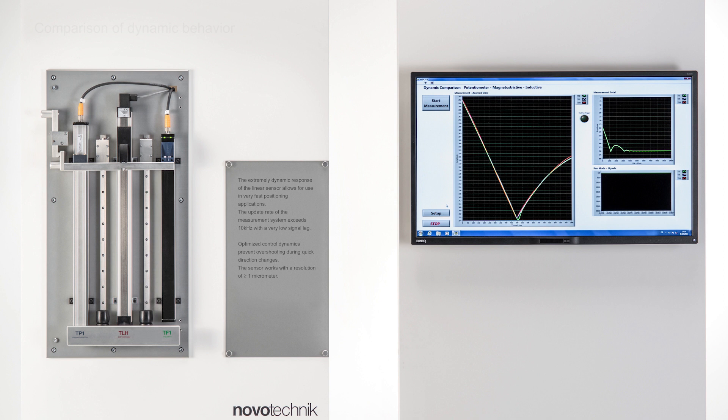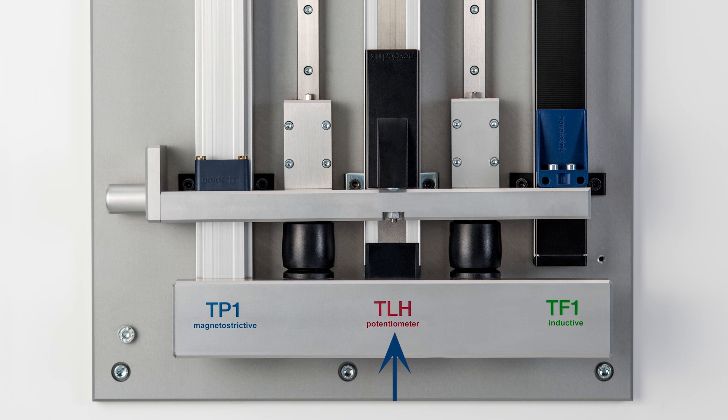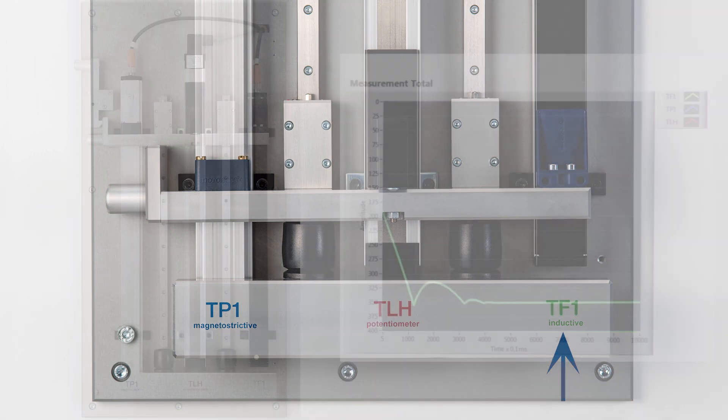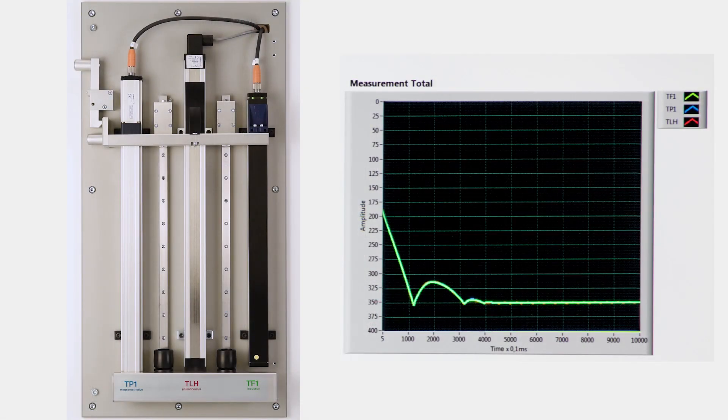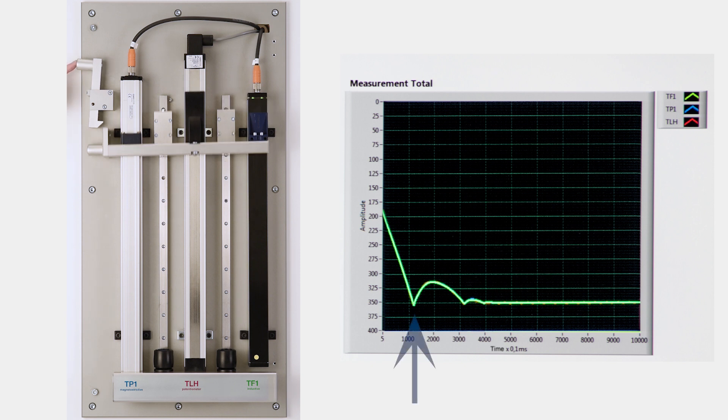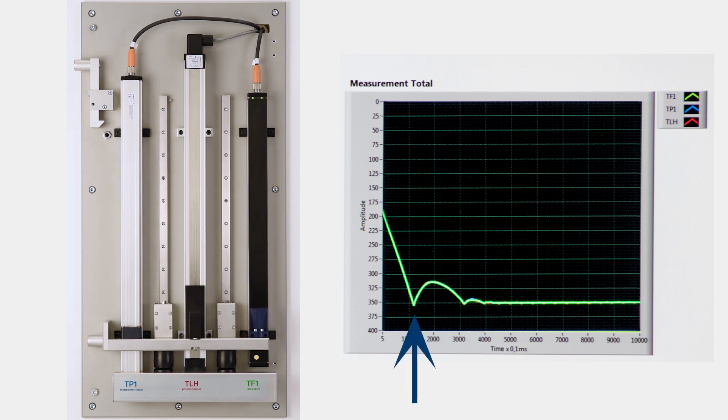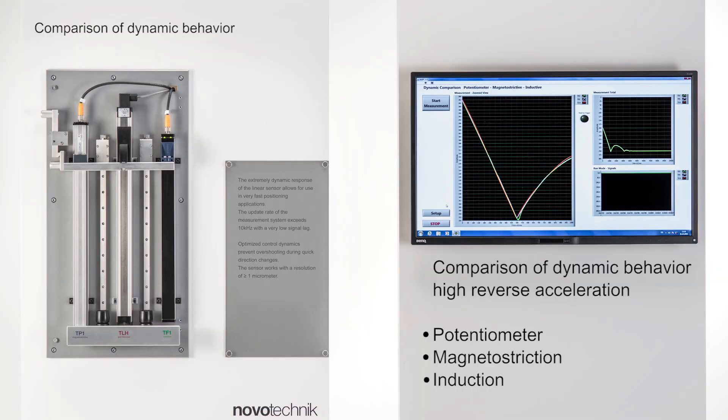To visualize high real-time acceleration, we compare a potentiometric, magnetostrictive, and the new inductive NovoPad sensor by moving them in parallel in a drop test with a dampening element at the bottom end stop. The position markers are forced to change direction within a very short time, reaching high levels of reverse acceleration needed for a comparison of the three measurement principles.